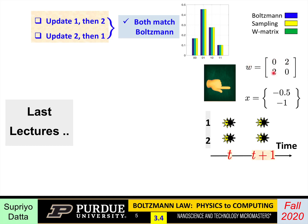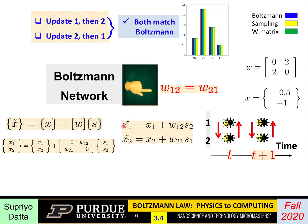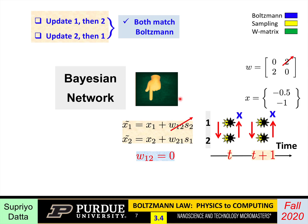If there's a W12, there's a W21 and they're equal. That means when you write down the synaptic functions — what is x1 tilde that determines the next state of neuron 1 — you find it involves the bias, plus an influence from the second neuron. And what determines the state of neuron 2 is affected by the state of neuron 1, with these effects from 2 to 1 and 1 to 2 exactly equal. But in the Bayesian networks we'll discuss, it is directed: W12 is 0, but W21 is non-zero.